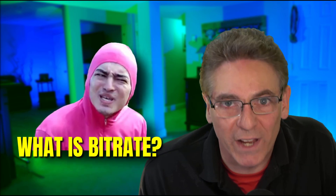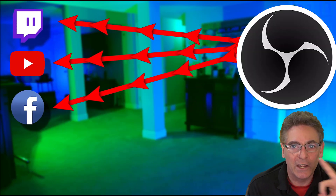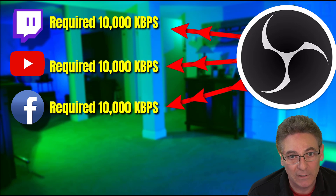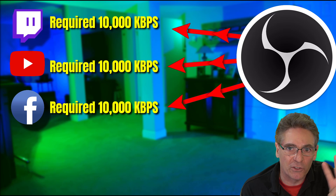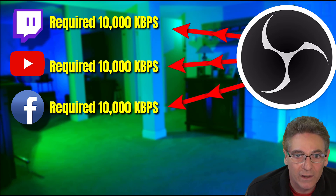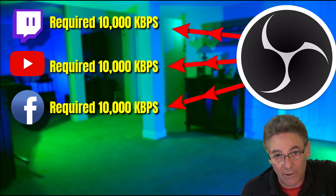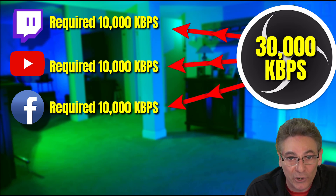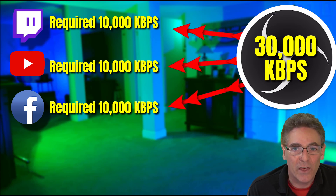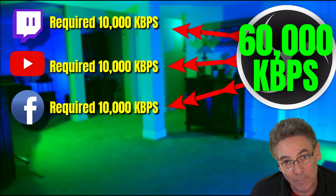What is bit rate? It's really nothing super confusing — it's just the amount of data being sent down a wire over time. It's measured in kilobits per second. Let's pretend you are connecting to Twitch, YouTube, and Facebook, and each one requires 10,000 kilobits per second. That means you're sending to three venues and you need to add all three to get the total — that would give you 30,000 kilobits.